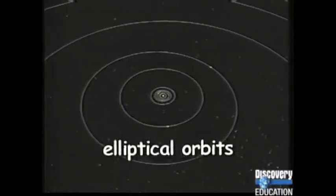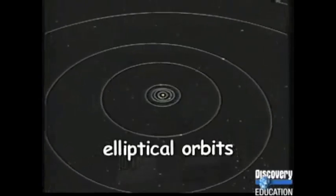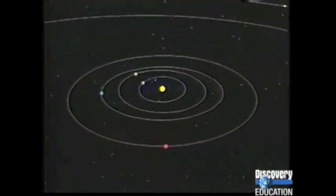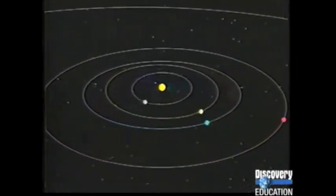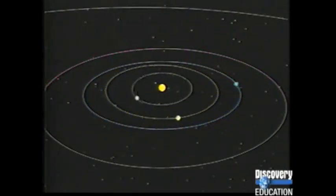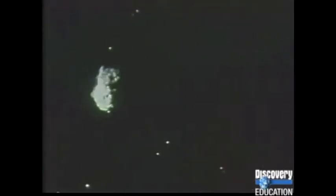Everything in the solar system moves around the Sun in elliptical orbits — orbits that are not perfect circles. Because their orbits are not circular, sometimes the planets are farther from the Sun than at other times. Asteroids and comets can take hundreds of years to travel from the far reaches of the solar system to pass close to the Sun.